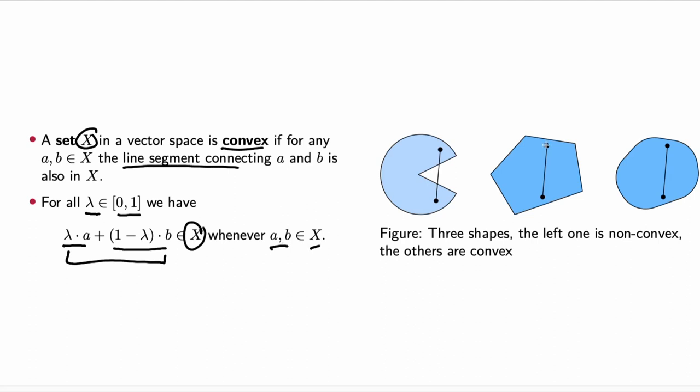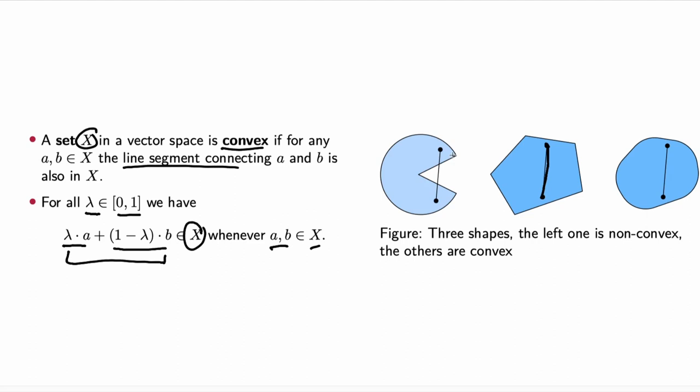So, any A and B in this convex set, the line segment between these two points is in the set. Here we have a counterexample where the line segment between two points is not in the set. You can see that convex sets typically don't have these cavities.